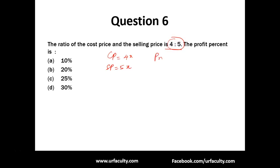What is the profit? We know that profit equals selling price minus cost price, which is 5x minus 4x, so we get x. Profit is x. Now we have to find the profit percentage. Profit percentage equals profit divided by cost price into 100. That's x divided by 4x into 100, which gives us 25 percent.